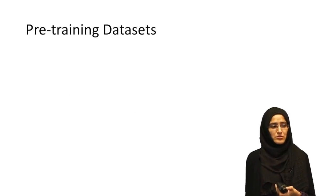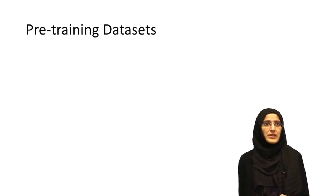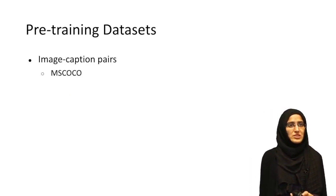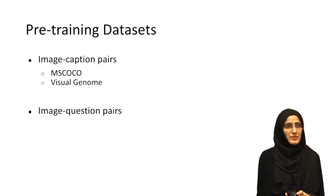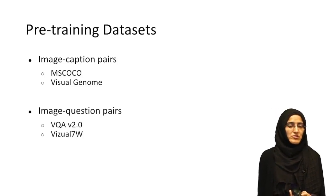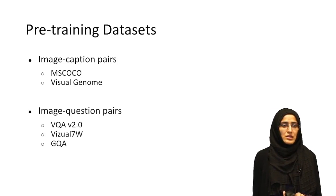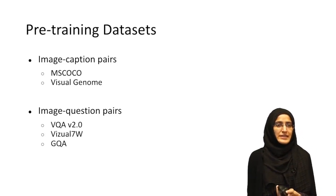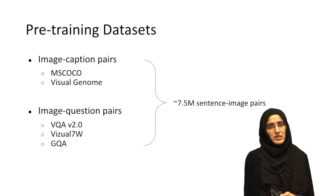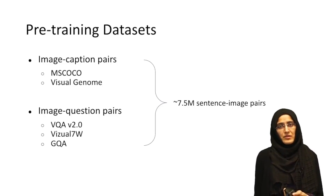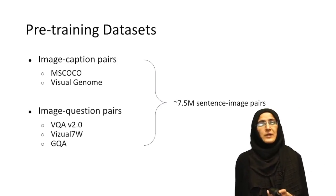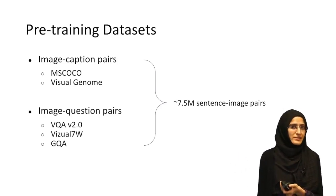For pre-training, you typically need a large-scale dataset. We use image-caption pairs from MSCOCO and Visual Genome, and image-question pairs from VQA V2.0, Visual7W, and GQA. These three VQA datasets are based on images from MSCOCO and Visual Genome. When combined, we have approximately 7.5 million sentence pairs for pre-training.